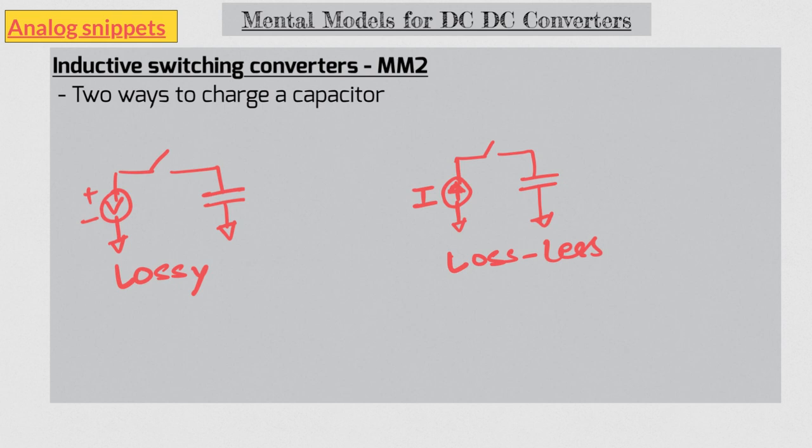In fact, this is not unique to capacitors. Even inductors have lossy and lossless charging. But condition here is exact opposite. And that means charging an inductor with a current source is lossy, but with a voltage source is lossless. Now coming back to capacitors.